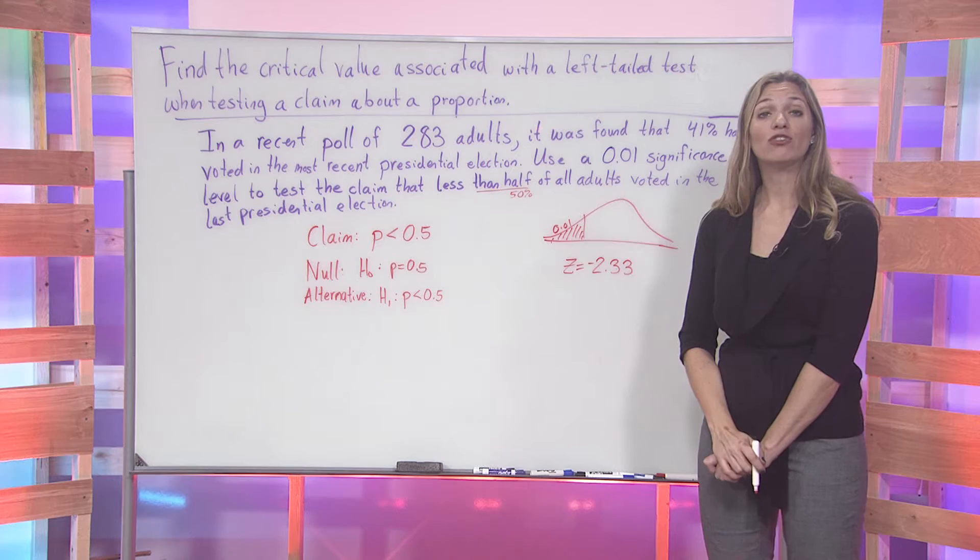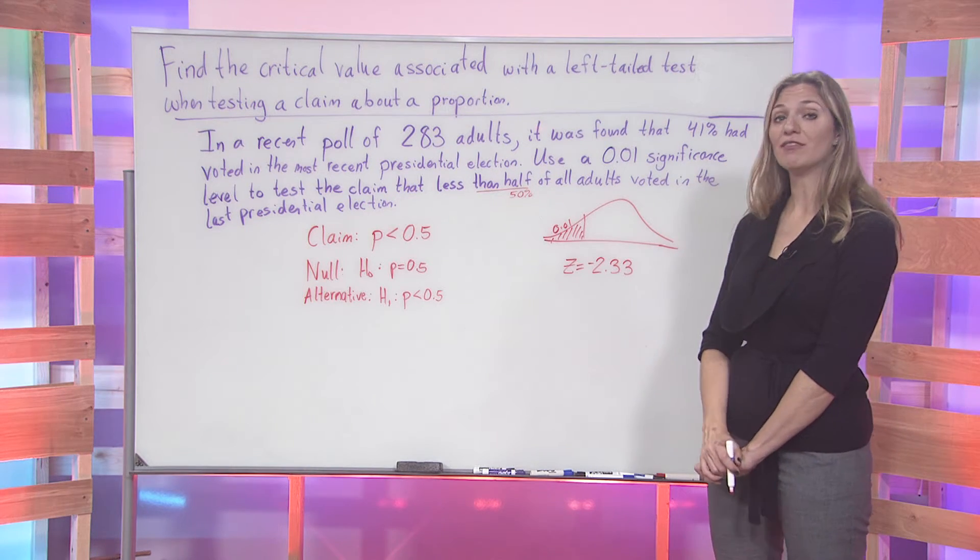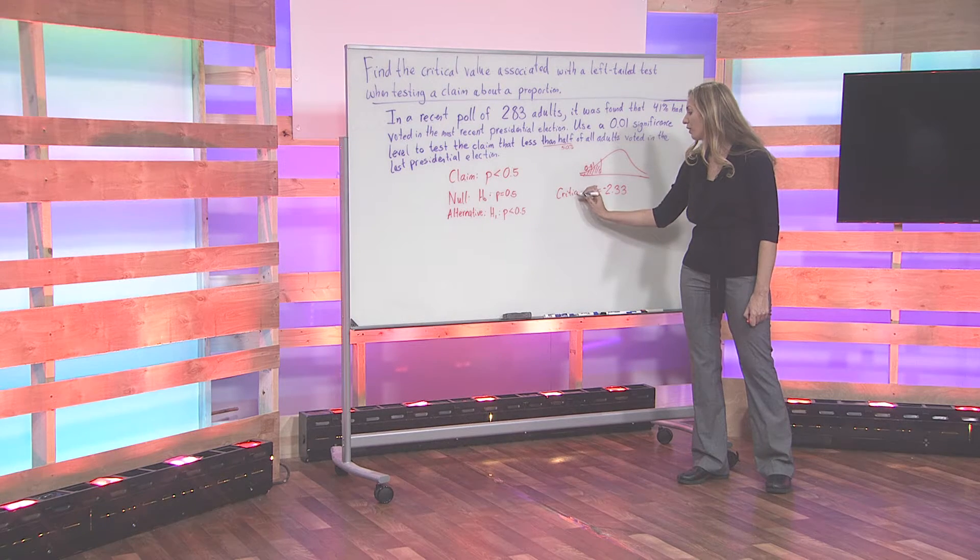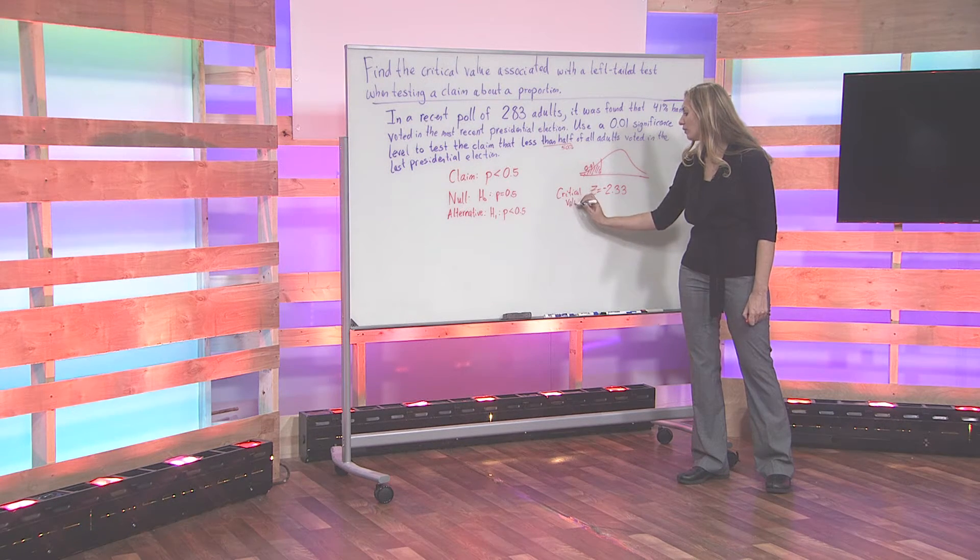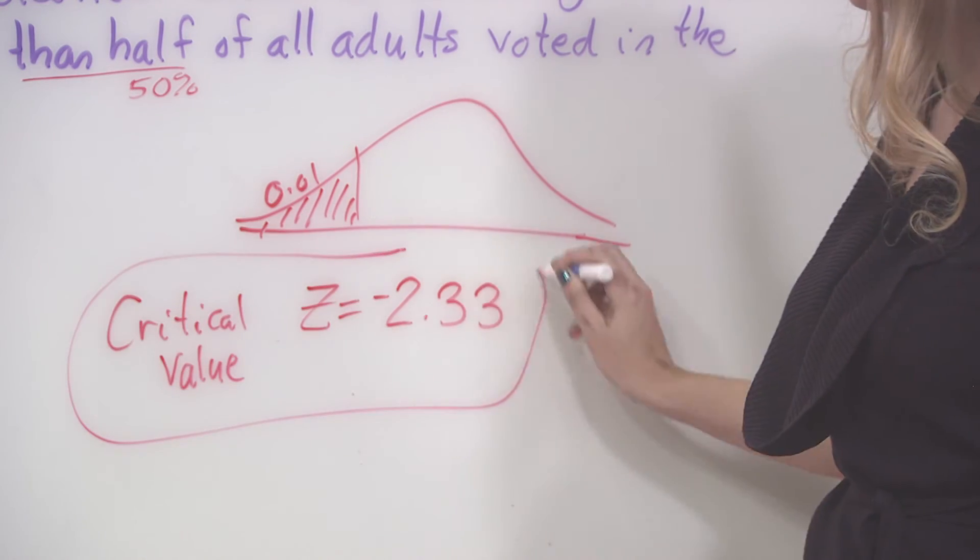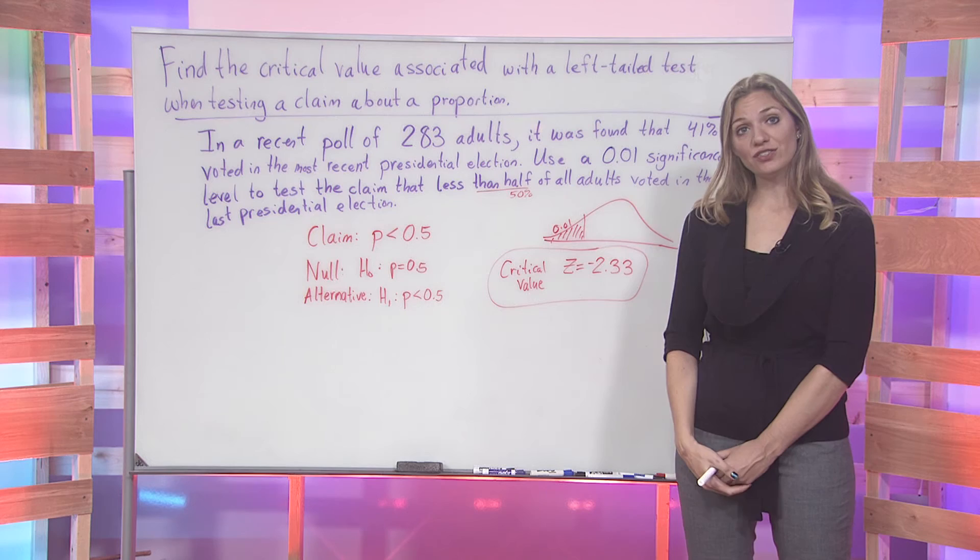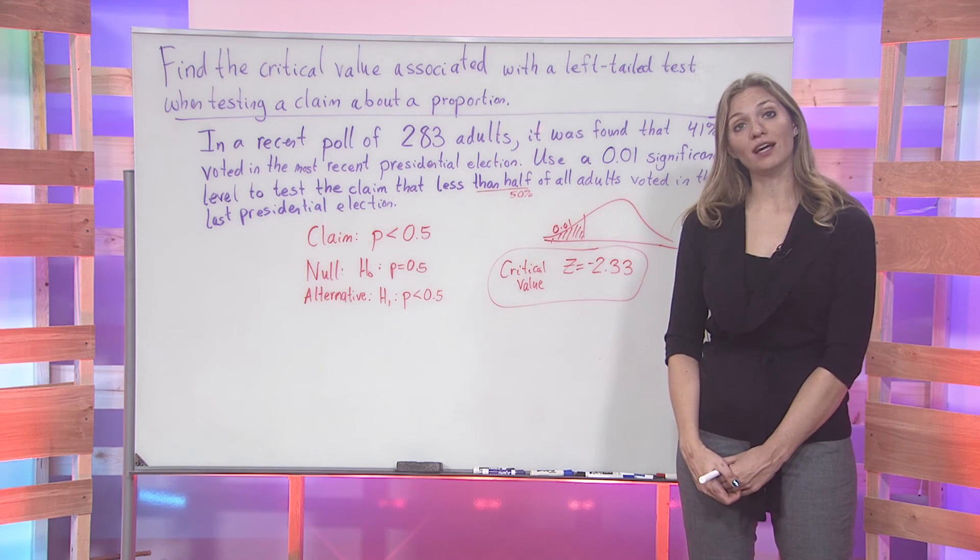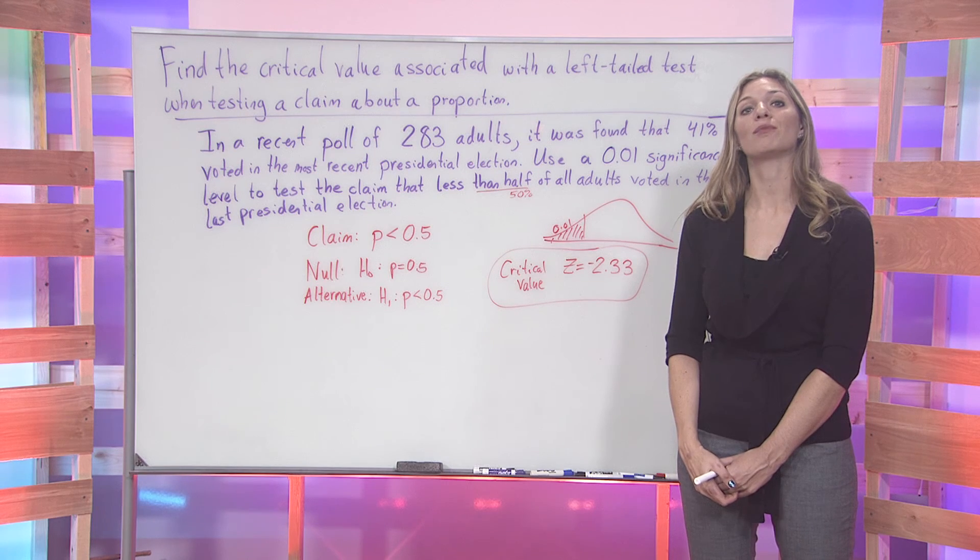This value should be negative because we are dealing with a left-tailed test. Thus, we have found our critical value. Our critical value for a 0.01 significance level is going to be negative 2.33. And this is a critical value that is associated for this example with a left-tailed test about a proportion.